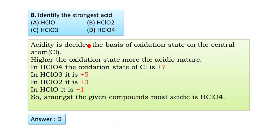Question number 8: Identify the strongest acid - HClO, HClO2, HClO3, or HClO4. Acidity depends on the oxidation state of the central atom, chlorine. Higher oxidation state means more acidic. In HClO4, chlorine is +7. In HClO3, +5. In HClO2, +3. In HClO, +1. Hence HClO4 is the strongest acid. Answer D is correct.